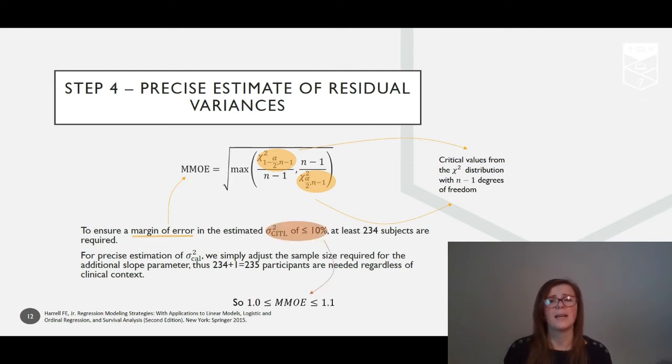For precise estimation of sigma-squared cal, we just need to adjust this sample size to account for the additional slope parameter. This one's really straightforward because regardless of the clinical context, we always just need 235 participants to fulfill this final criterion.